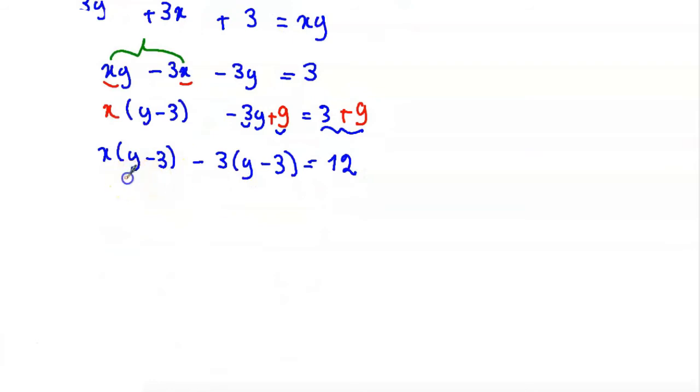Now we take y minus 3 as a common factor, so y minus 3 times x minus 3 equal to 12. So now as we said before we have the form two parentheses equal to constant c.